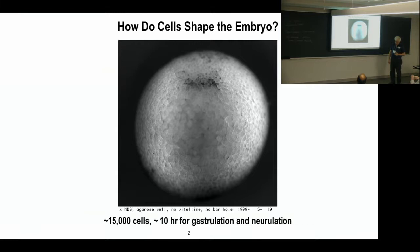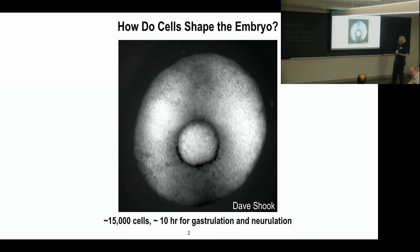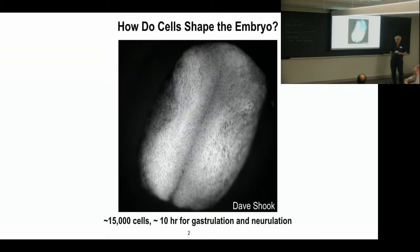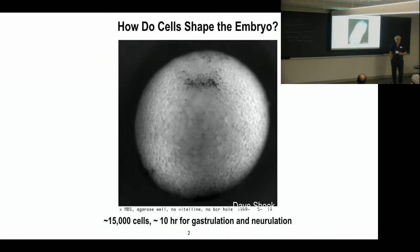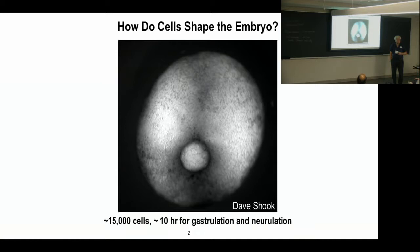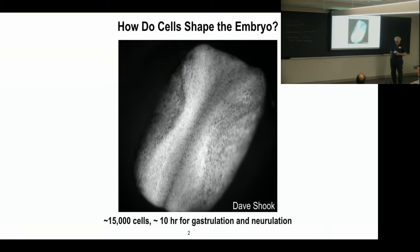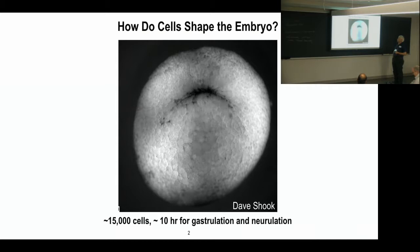What I've been working on for a number of years is how do cells shape the embryo. This is the setup of this embryo and it's gastrulating. It's going to take about five hours to get through gastrulation and another five for neurulation, and there's 15,000 cells there. There's 530 some members of Congress and they can't get along and cooperate on anything. How do 15,000 cells cooperate to make that happen? That's a question I've been interested in for some years.